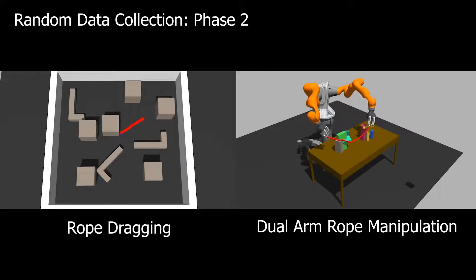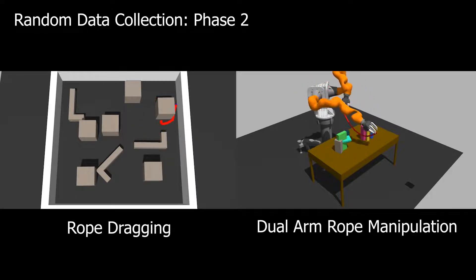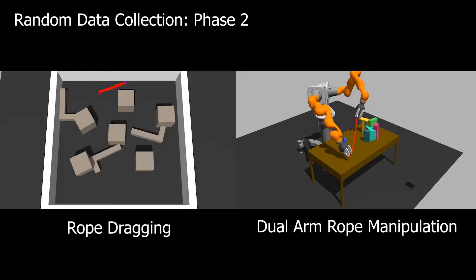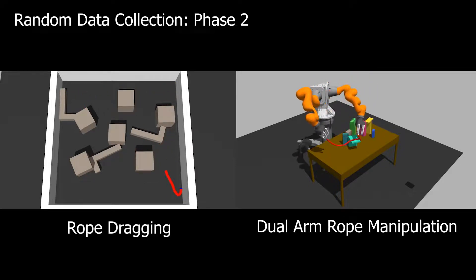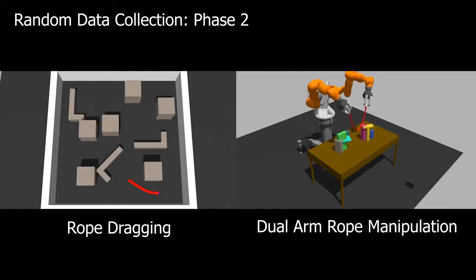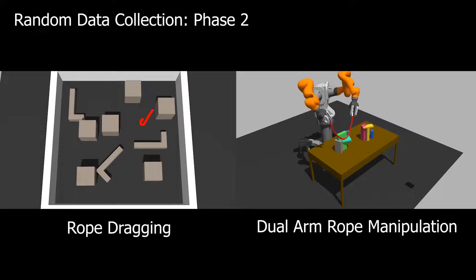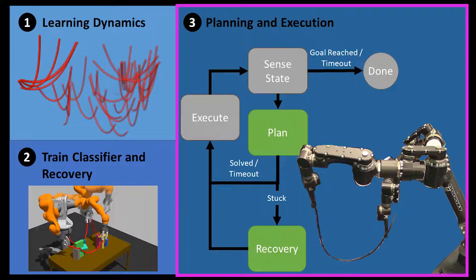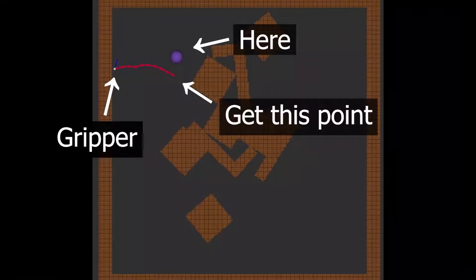In phase 2, we repeat this random data collection process, but in environments where the physical constraints are activated. We use this data to train our classifier and recovery models. We collect a limited dataset here, as opposed to the large datasets that would be needed to accurately train a full dynamics model. Finally, we use the learned dynamics, classifier, and recovery in a closed-loop of planning and recovery to perform various tasks.